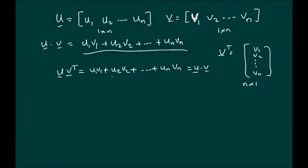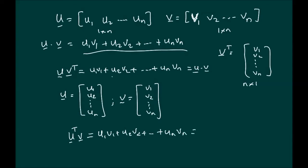Right, in a similar way, if U was the column vector, U1, U2 up to Un, and V was also the column matrix, V1, V2 up to Vn, then rather than taking the transpose of the second matrix, if we took the transpose of U and multiplied it into V, we would end up with the same situation: U1V1 plus U2V2 plus UnVn, which is U dot V.